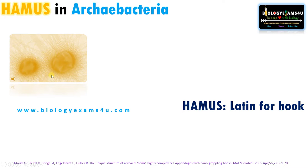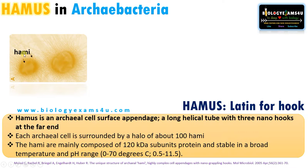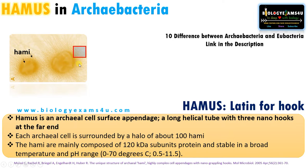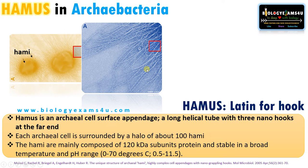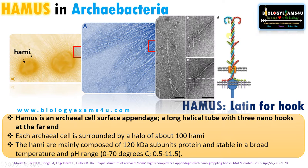As you can see, there is a halo around this archaebacteria — these are hami. Hami is the plural of hamus. When we zoom in on these fine structures or this halo, we can see under electron microscope that these are long helical, tube-like structures.